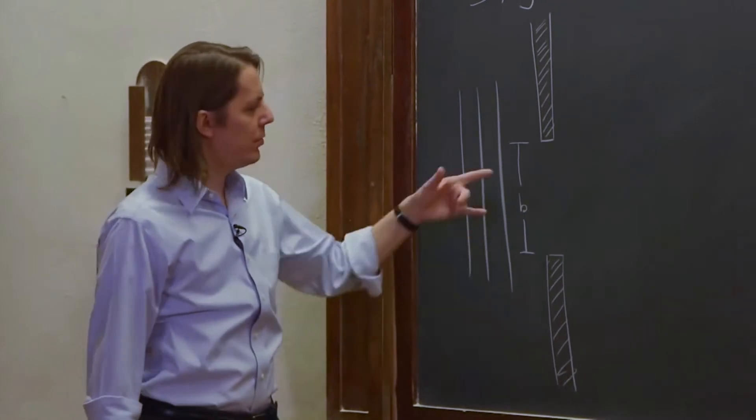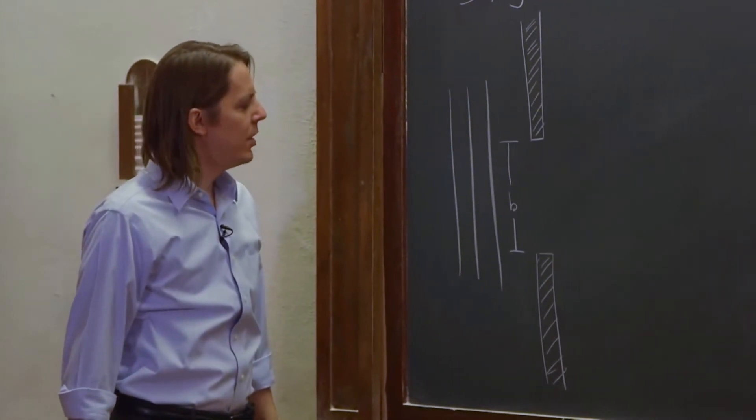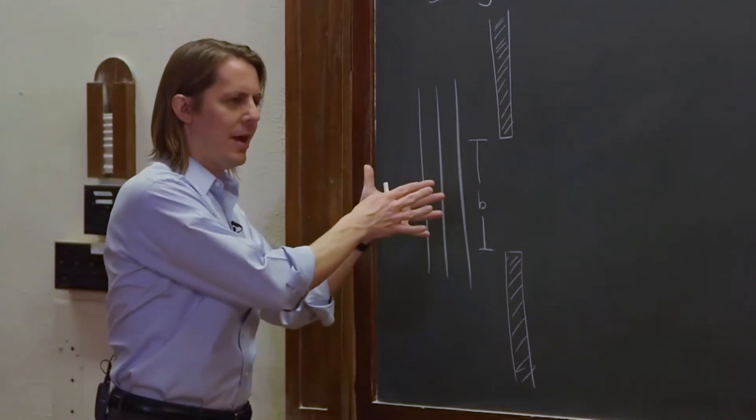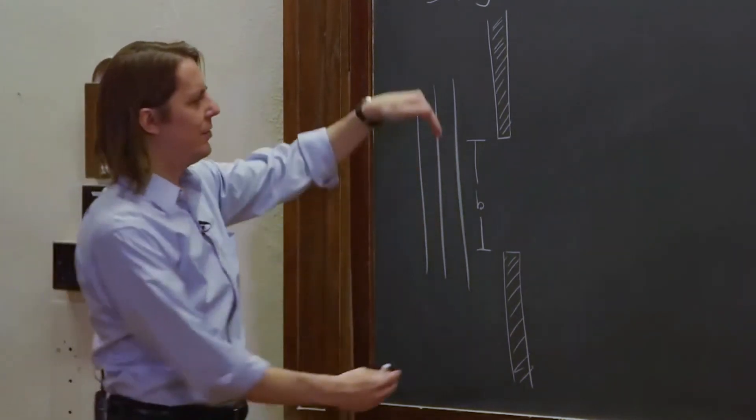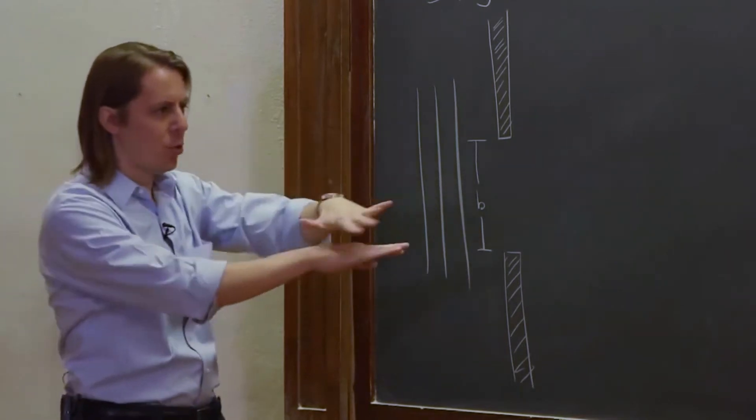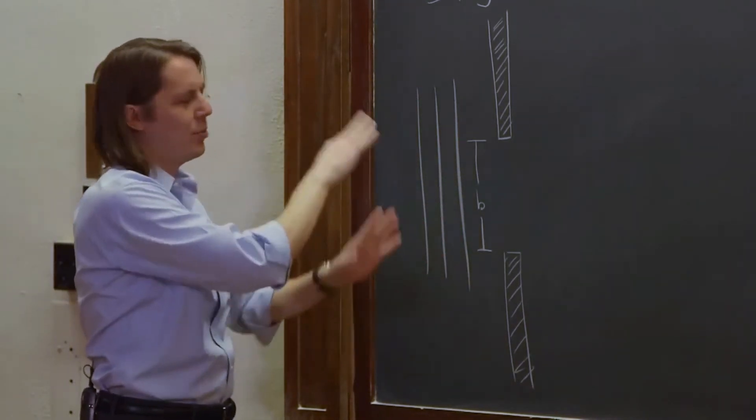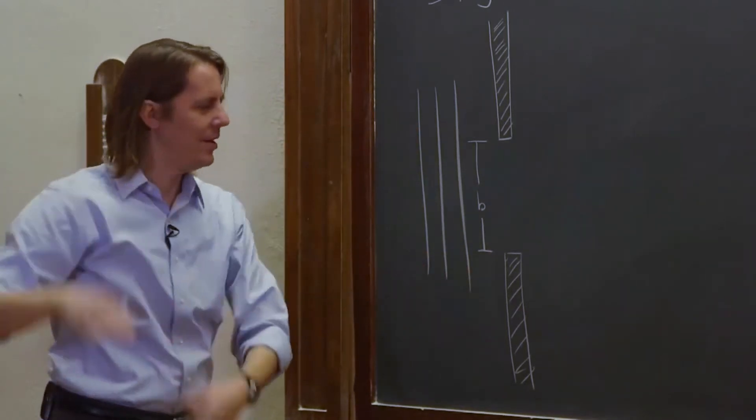So the plane wave goes right through there, right through a slit of width B. One thing that's easy to forget is the slit is actually out of the plane of the board. This is the width of the slit. The slit goes out like this, so we actually have a horizontal slit that the light is going through. It's easy to forget where the slit is.